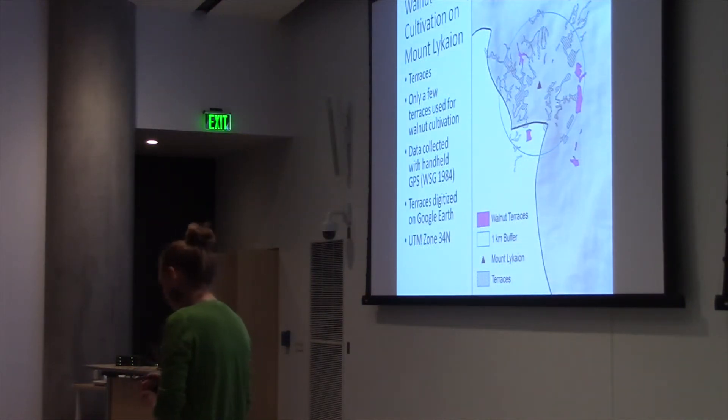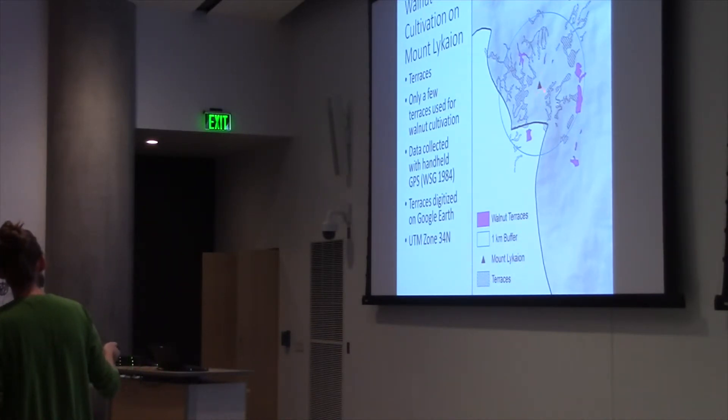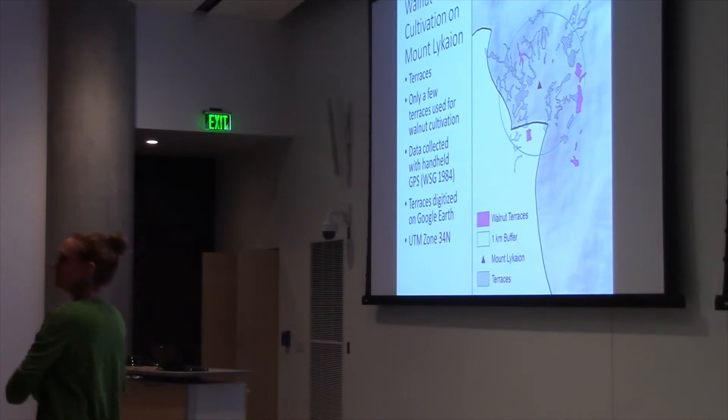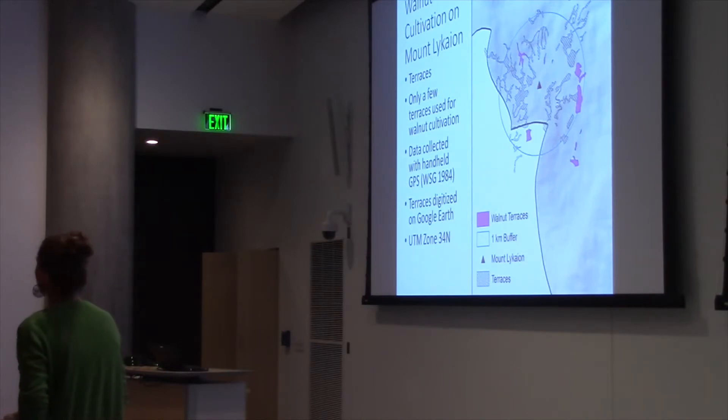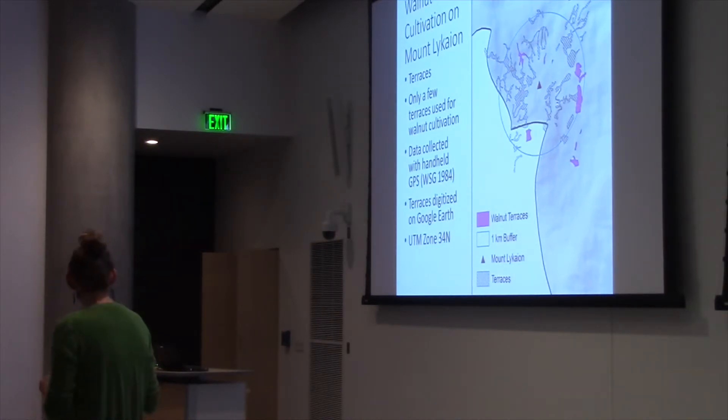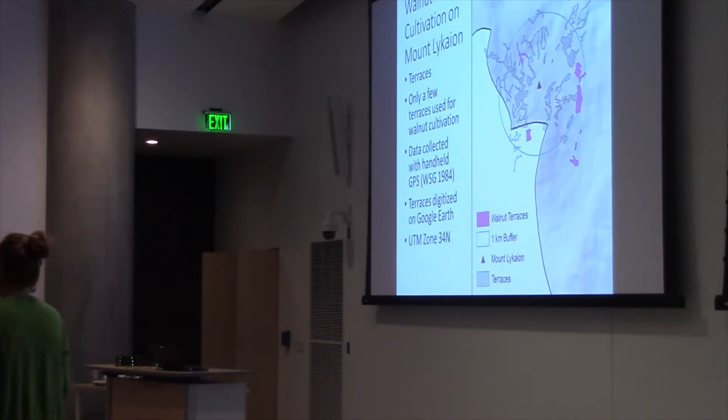What I proposed to do was look at terraces within a one kilometer buffer of Mount Lycaon itself, here's the peak, and see where walnuts were growing. If walnuts were growing there, awesome. If they were not, I didn't take a point. I took a point where all the walnuts were growing. The data was collected with a handheld GPS in WSG 1984. As you can see, there's only a few terraces that were actively being used for walnut cultivation, but within these terraces there were very healthy walnuts. I thought, well, this isn't a large sample, but it's clearly a good sample because these walnuts are very happy.